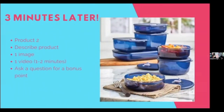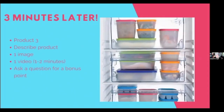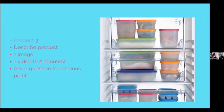Three minutes later — remember this is quick and fast-paced — the 30-minute format is the sweet spot I've found; that's how long I can keep their attention, though many people do it for 45 minutes or an hour. Product number two: I'm describing the product, I have one image, I have a one-to-two minute video, and again I'm asking them a question for bonus points — it could be as simple as what's your favorite leftovers, whatever goes with that product. Three minutes after that, product number three: describe it, one image, one-to-two minute video, then ask another bonus question.